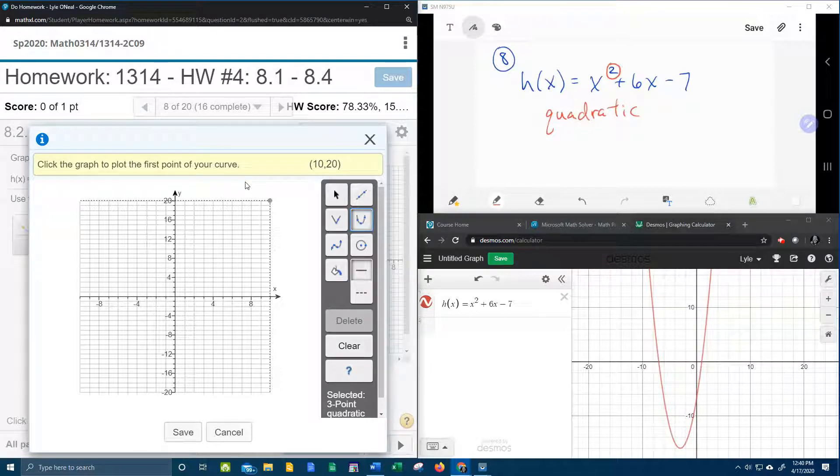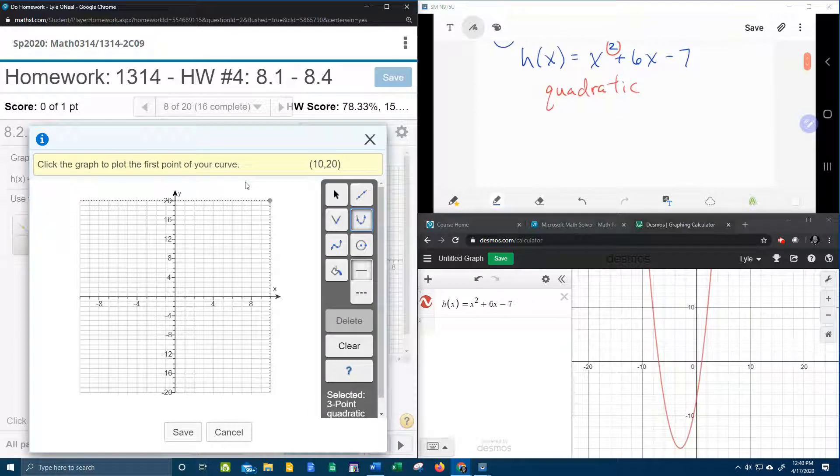So in order to find my three points, what I'm going to do is come over here to my function, and I'm going to make a little x, y table, and I'm going to pick three x's, find the y's, plot the points, and connect the dots.